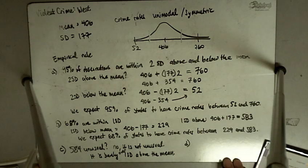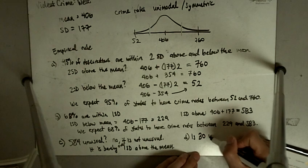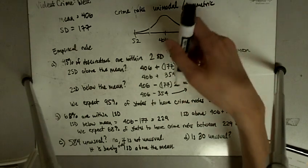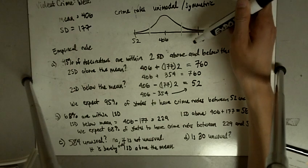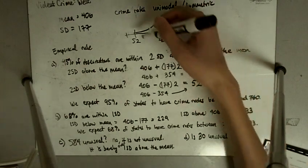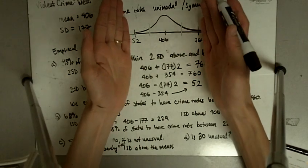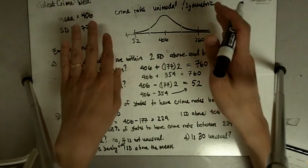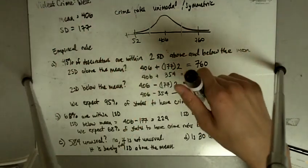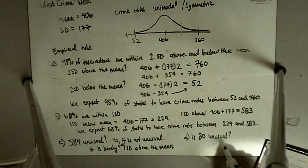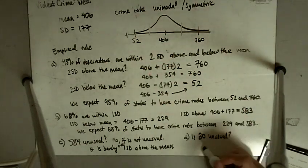Part D asks: is a crime rate of 30 unusual? 95% of states have crime rates between 52 and 760. This crime rate is down at 30 — below 52. If 95% are between 52 and 760, only about 5% have crime rates outside of that range. So 30 is outside of that range, meaning this state is among the roughly 5% of states outside this range. So yes, 30 is unusual.